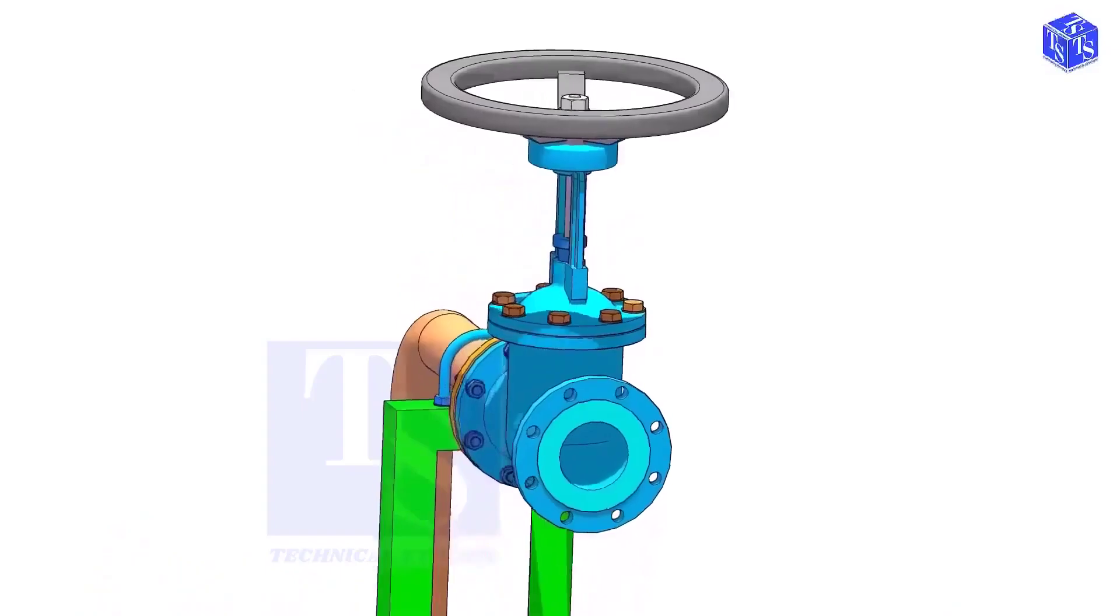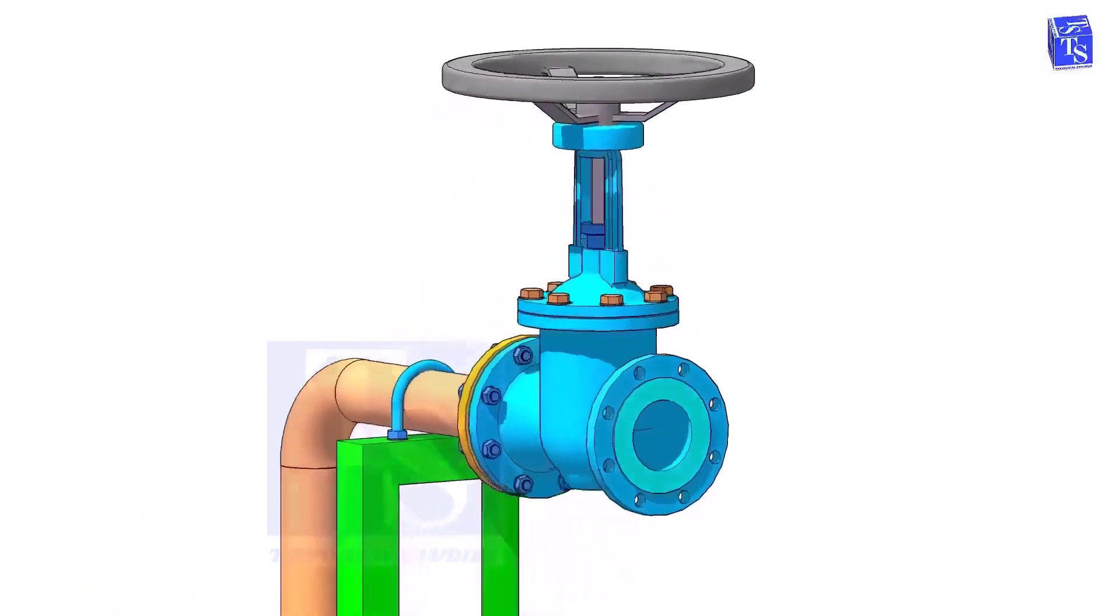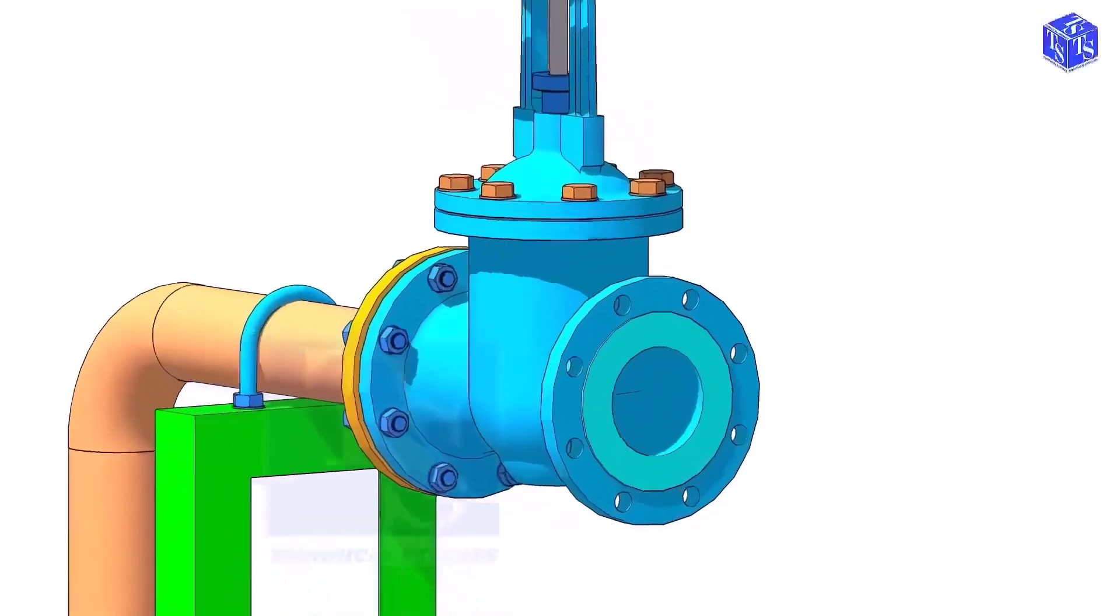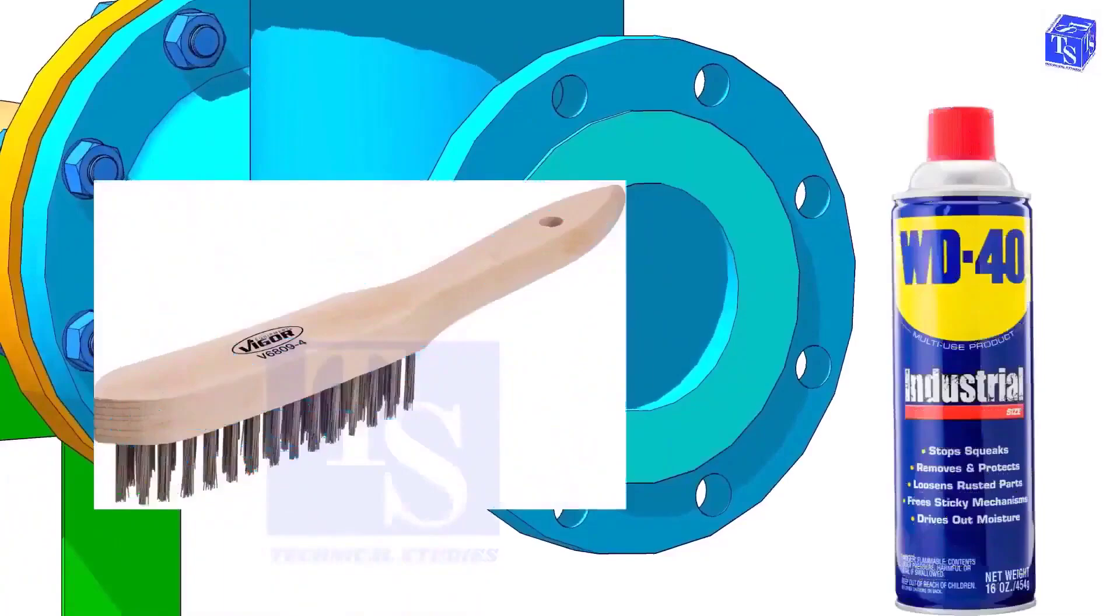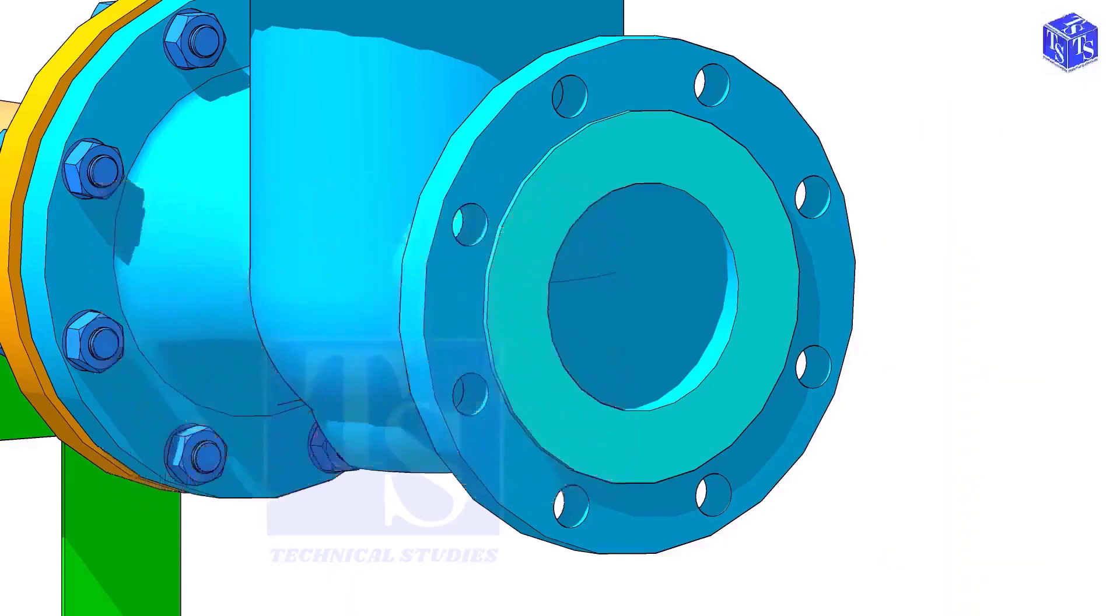Before the installation of a valve, we need to clean the face of the pipe flanges and the valve flanges. But never use any tools or machines that will damage the face of the flanges. I suggest you only use a manual wire brush, WD-40, cotton waste, etc.